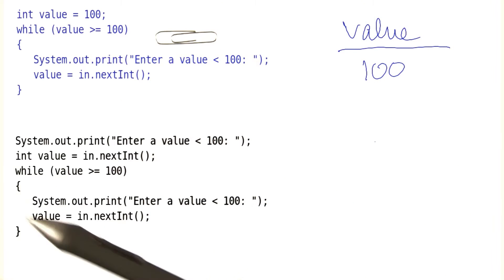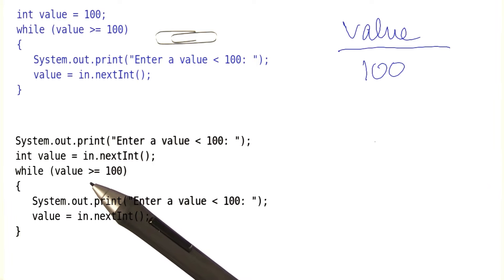We go to the loop. Value is greater or equal than 100. In fact, we've set it to make sure we enter the loop.